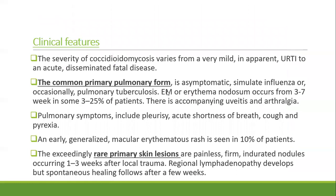The severity of coccidioidomycosis varies from mild, inapparent upper respiratory infection to acute disseminated fatal disease. The common primary pulmonary form is asymptomatic and simulates influenza; occasionally pulmonary tuberculosis-like or erythema nodosum occurs from three to seven weeks in about 3 to 25 percent of patients, with accompanying uveitis and arthralgia. The pulmonary symptoms include pleurisy, acute shortness of breath, cough, and pyrexia. An early generalized macular erythematous rash is seen in 10 percent of patients.